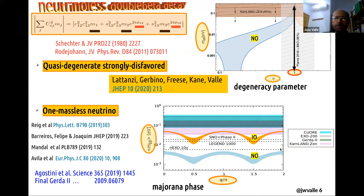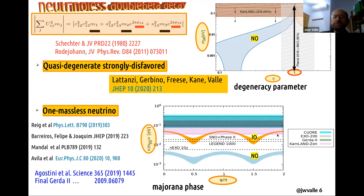For normal ordering, this band lies below the dashed lines that show the sensitivity expected in the next round of experiments. So we must unfortunately discard the normal ordering case and move up to the inverted ordering. But compared with the inverted ordering in the generic case, the band is much, much thinner so that it is completely covered by the expected sensitivity of the next round of experiments, especially nEXO. Even LEGEND covers almost everything. Even the current KamLAND-Zen result, which is already the present result, rules out the hatched region in magenta. So if you look at the value of the Majorana phase, it already rules out three different chunks of Majorana phase.